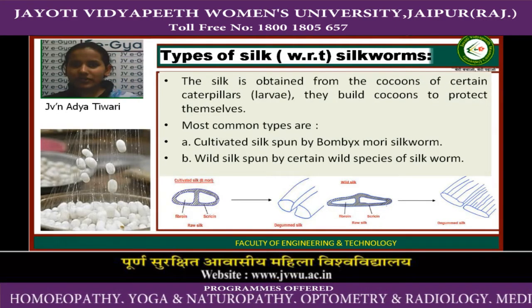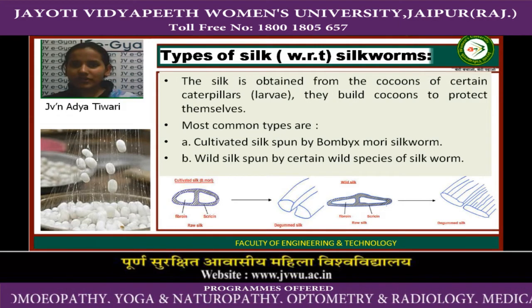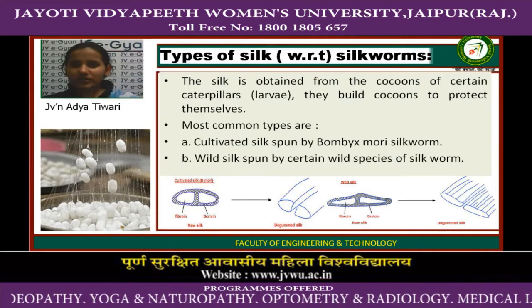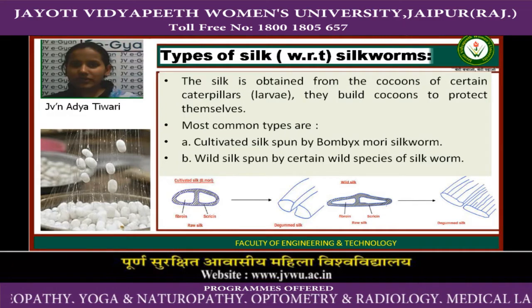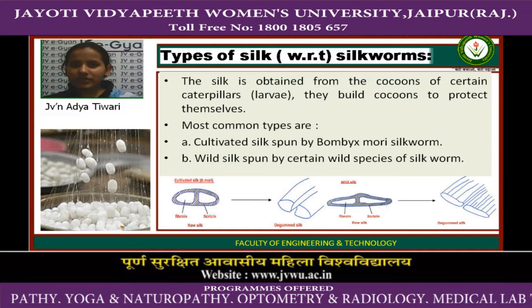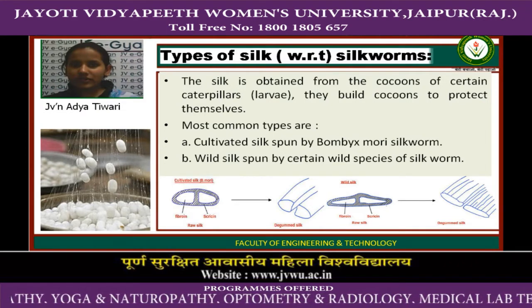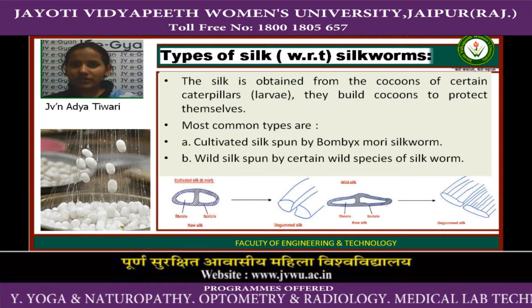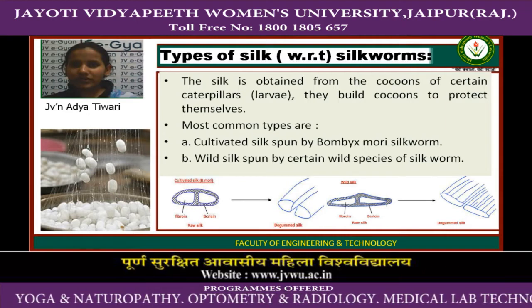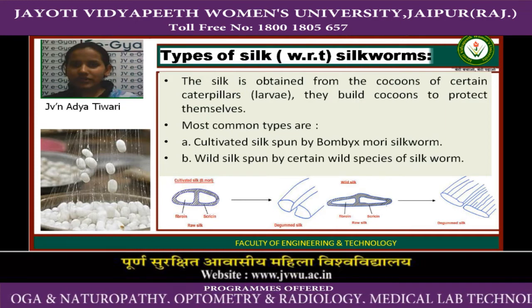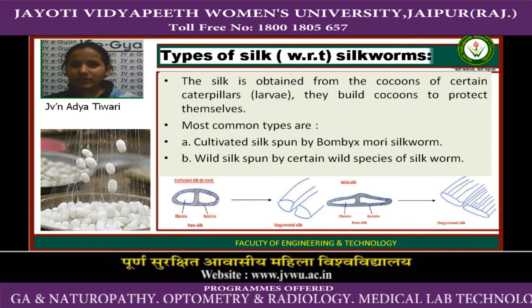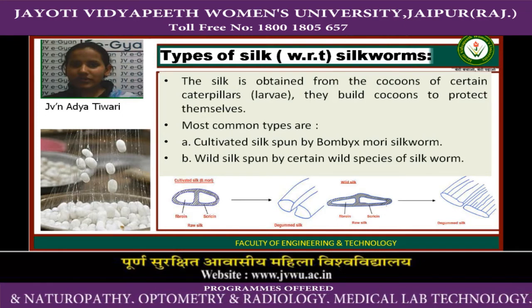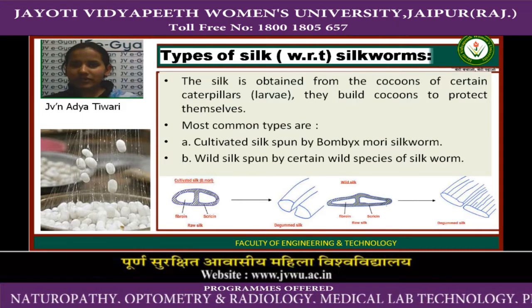Production of silk is called sericulture. There are many types of silk and silk is obtained from the cocoons of certain caterpillars. They build cocoons to protect themselves. One type is cultivated silk and white silk. Looking at the structure, in the middle there are two lobes of the silk fiber. The outer layer is sericin and the inner layers are fibroin. Fibroin is known as the silk filament.